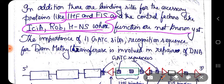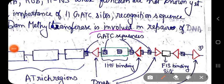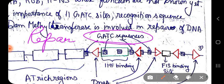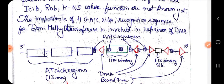Special sequences are also found within the origin of replication — the GATC sequences. These GATC sequences are important not in replication itself but in the DNA repair process, where they play an important role in the prokaryotic repair mechanism. These GATC sequences are distributed throughout the origin of replication and also throughout the E. coli genome.